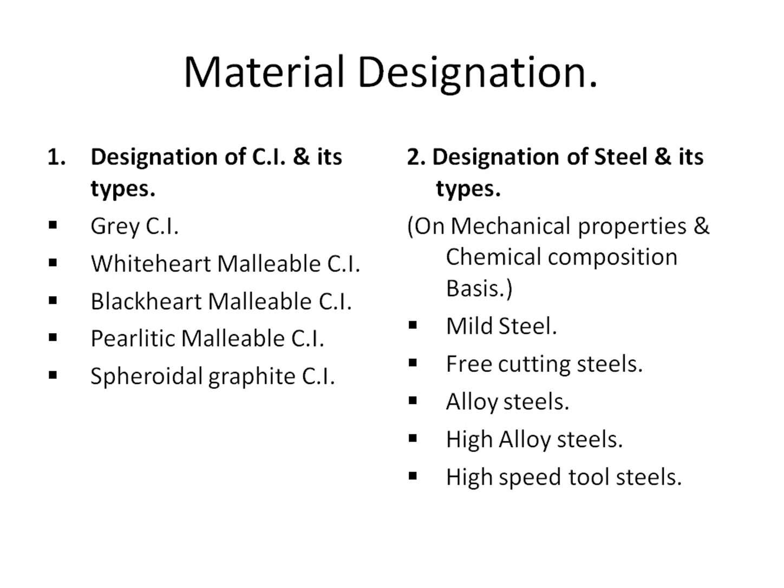First, I will explain how the cast iron is designated. Before that, it is necessary to understand the types of cast iron. The cast iron can be classified into five types: gray cast iron, white heart malleable cast iron, black heart malleable cast iron, pearlitic malleable cast iron, and spheroidal graphite cast iron.